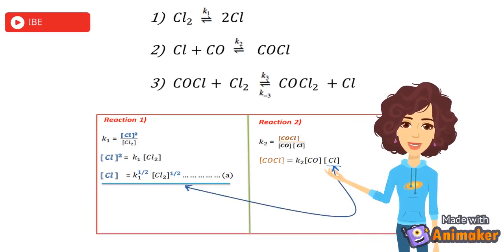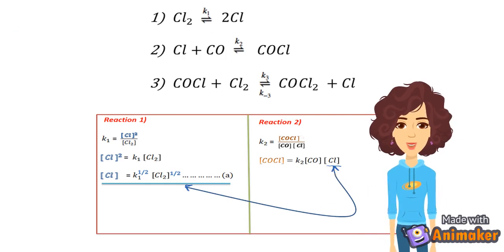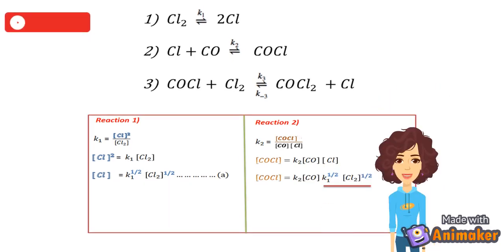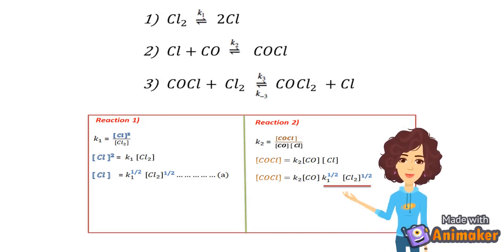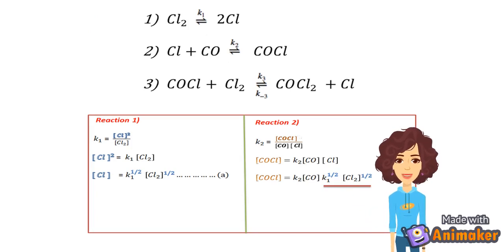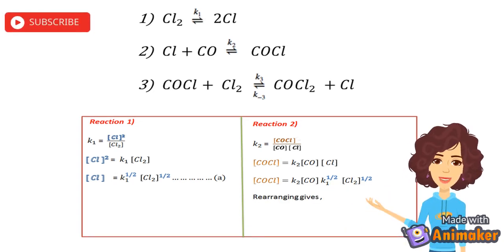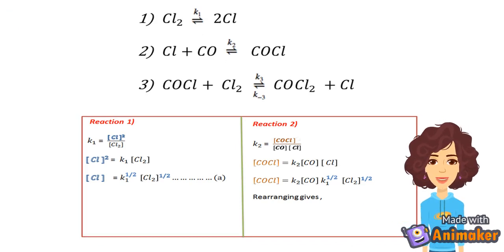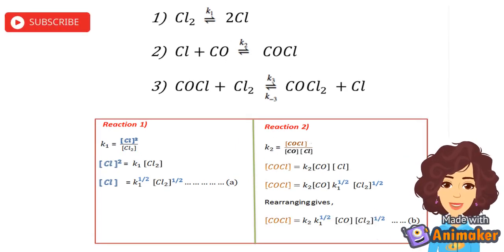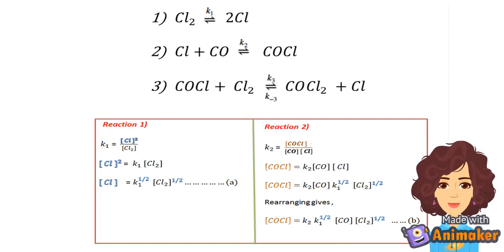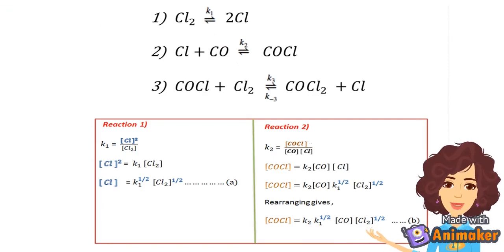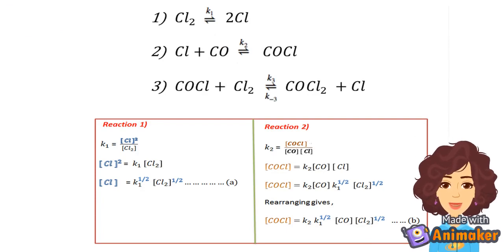Now rearranging: concentration of COCl equals K2 times concentration of CO times concentration of Cl. We can substitute the value for concentration of Cl from equation A. After substitution, we get concentration of COCl equals K2 times concentration of CO times K1 raised to half times concentration of Cl2 raised to half. Rearranging, concentration of COCl equals K2 times K1 raised to half times concentration of CO times concentration of Cl2 raised to half. This is labeled as equation B.